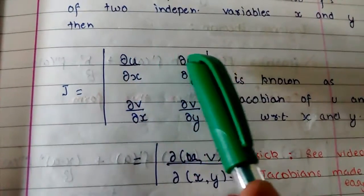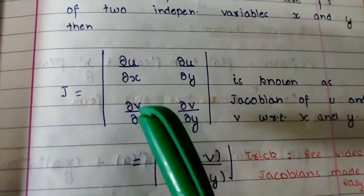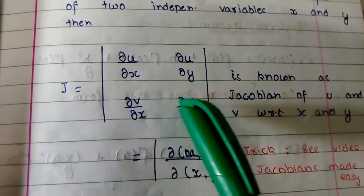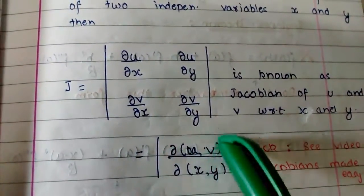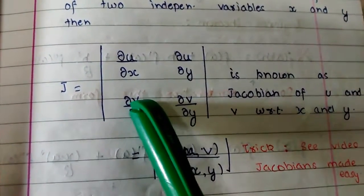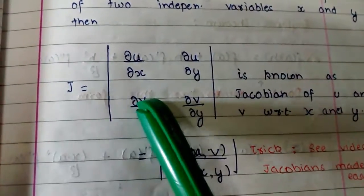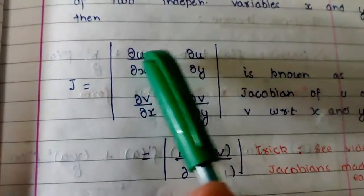You see u is here in row and u is here in row. And v is the same again because it is in the numerator, so it is same along row. V here and v here, u here and u here.